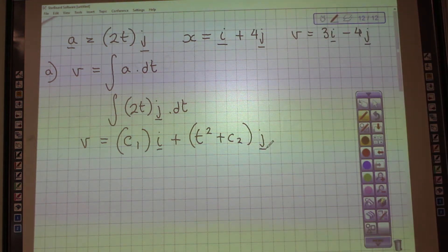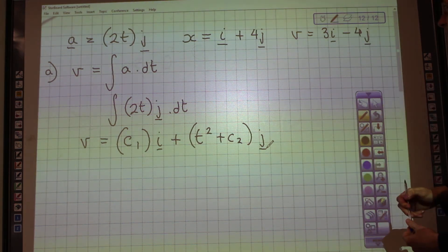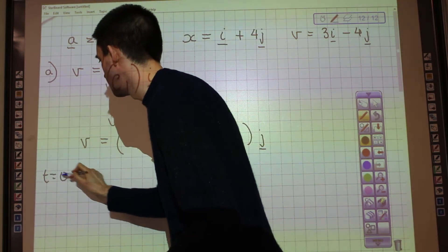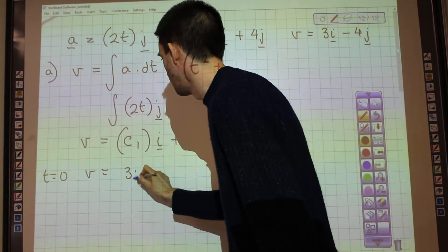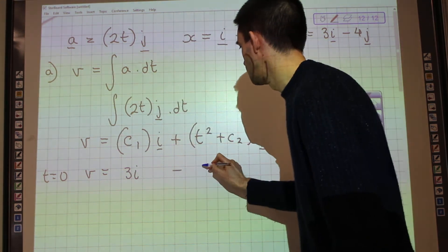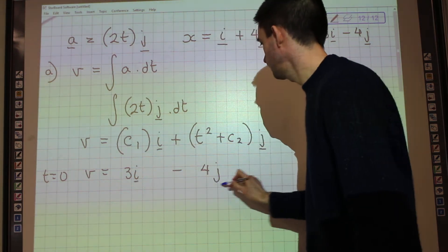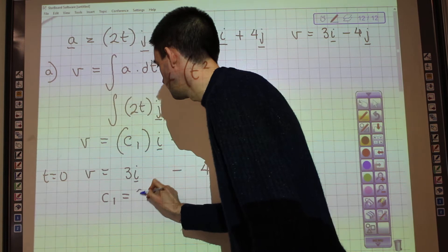Okay. So we're told at time zero, the velocity is 3i minus 4j. So we can substitute that integration in. So when t is zero, v equals 3i minus 4j. Which means, looking at the i component, that c1 equals 3.